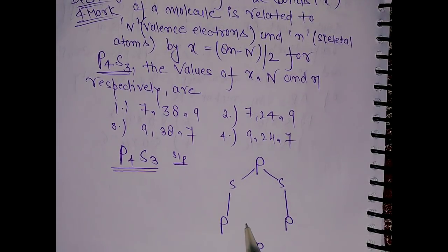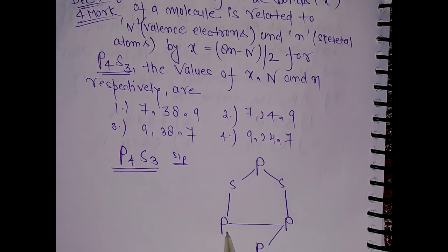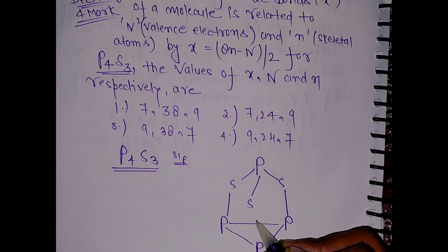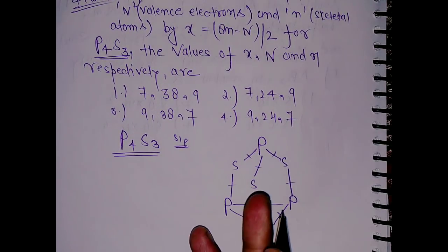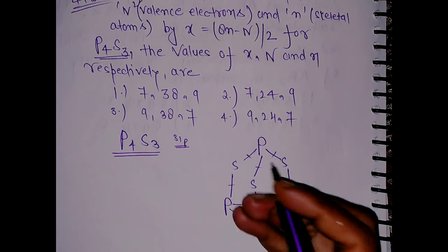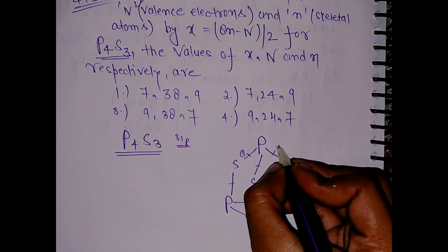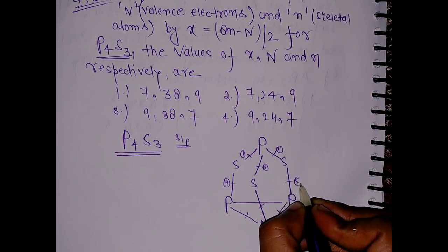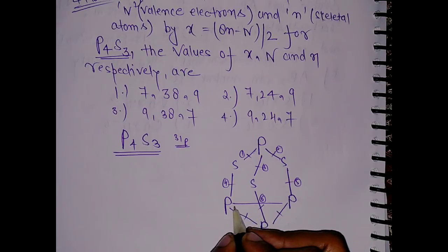This is connected by S, this is also connected by sulfur, these three are interconnected to each other, and this phosphorus and this phosphorus is connected by sulfur. If you look at the sigma bonds, how many sigma bonds are there? This is one, two, three, four, five, six, seven, eight, and this one is nine.